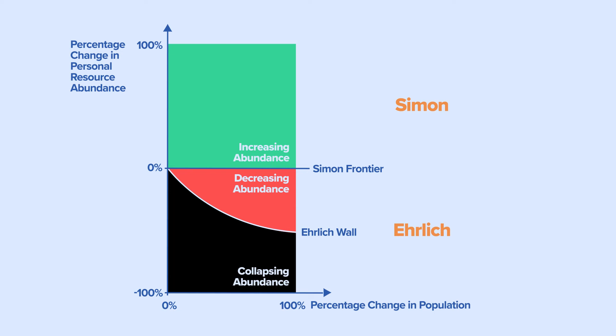The area above the Simon Frontier line can also be divided into two zones. We draw a 45-degree line to divide the two zones and call this line the transcendence line. The area below the transcendence line and above the Simon Frontier line is the zone of increasing abundance, where personal resource abundance increases, but not as fast as population. The area above the transcendence line is the superabundance zone, where personal resource abundance increases faster than population.